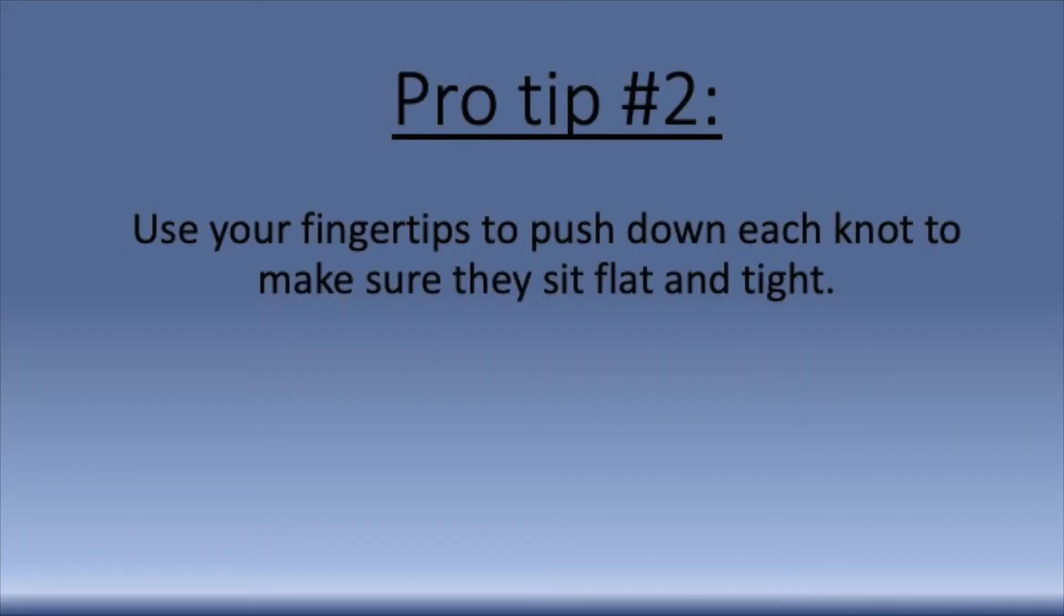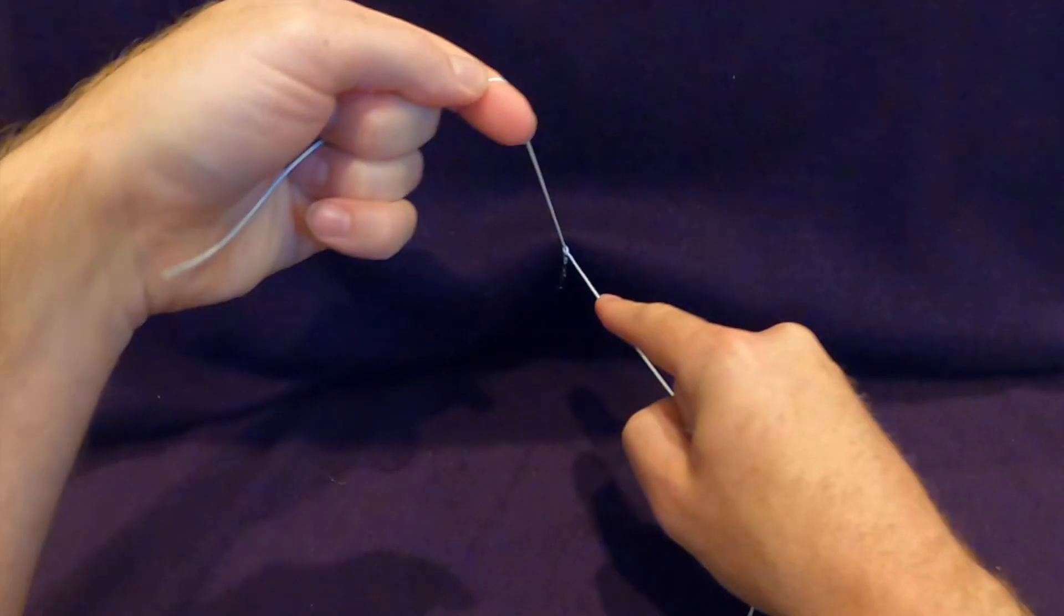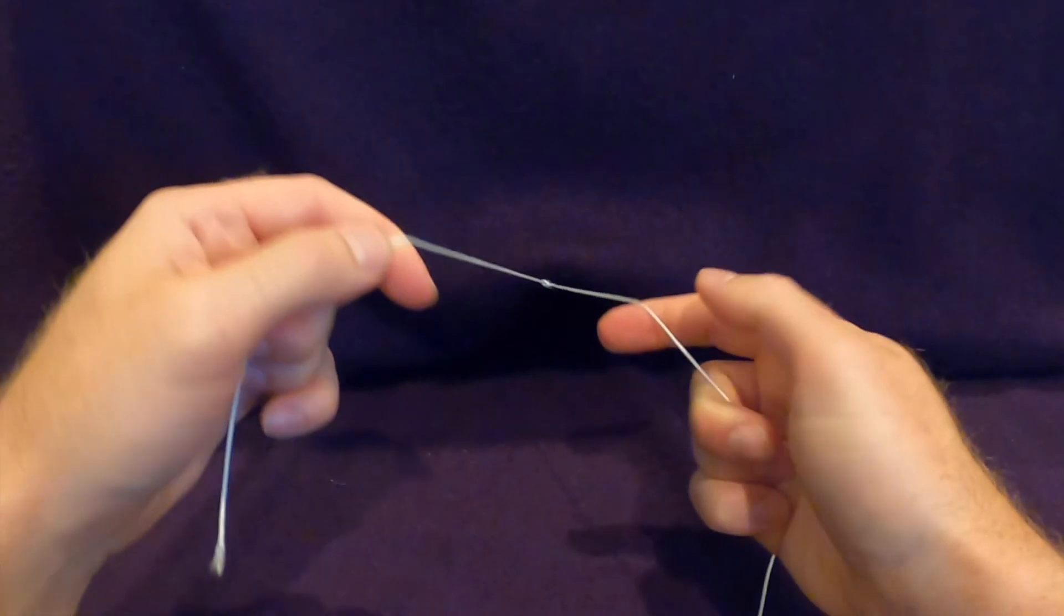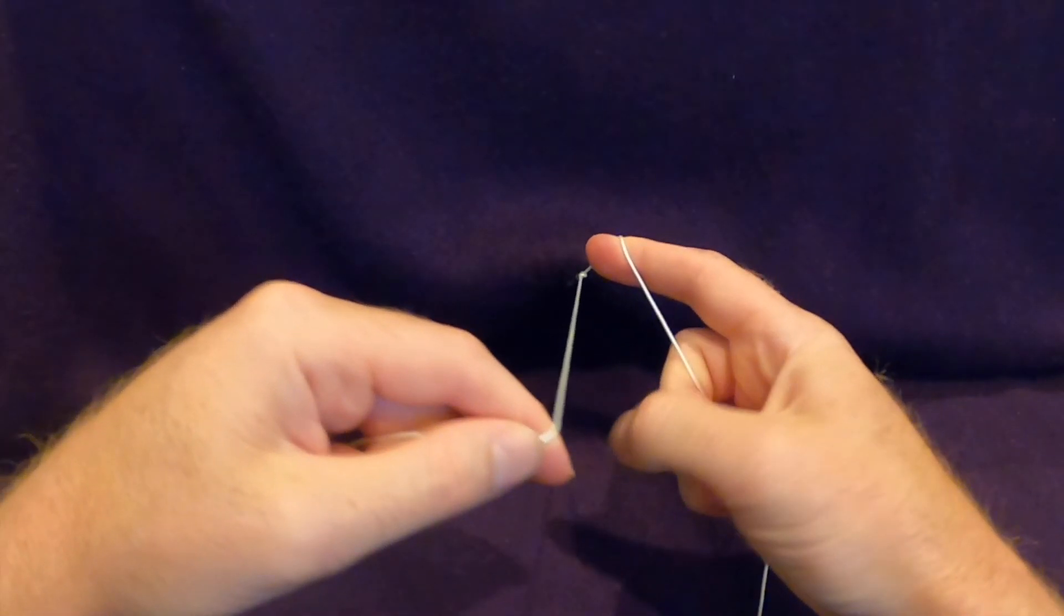When cinching the knot, use your fingertips to push the knot down to make sure it sits flat and tight. The thumb and index finger move back into the C position and we're ready for the next knot.